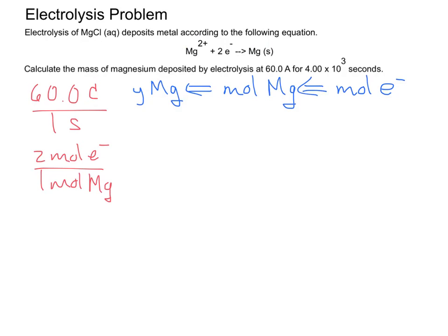So we're going to need moles of electrons, but what we have is coulombs. So is there a relationship between coulombs and moles of electrons? What is that conversion factor called? The Faraday constant, 96,485 coulombs per mole of electrons.